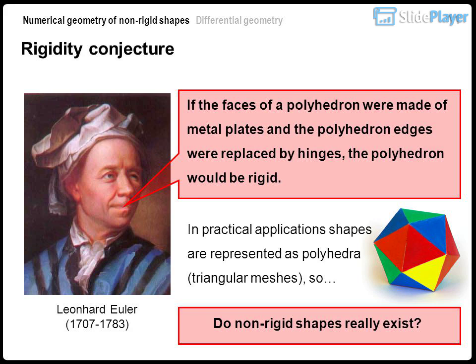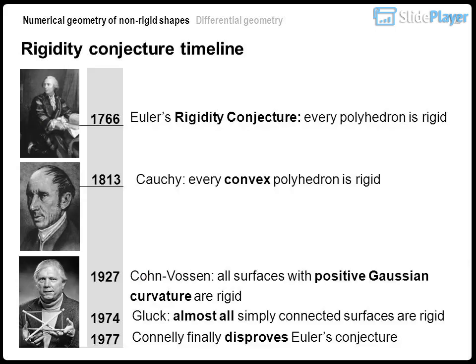Rigidity conjecture: if the faces of a polyhedron were made of metal plates and the edges replaced by hinges, the polyhedron would be rigid. In practical applications, shapes are represented as polyhedra and triangular meshes. Leonhard Euler, 1707–1783. Conjecture timeline: Euler's rigidity conjecture (every polyhedron is rigid, 1766); Cauchy (every convex polyhedron is rigid, 1813); Cohn-Vossen (all surfaces with positive Gaussian curvature are rigid, 1927); Gluck (almost all simply connected surfaces are rigid). Connelly finally disproved Euler's conjecture in 1977.